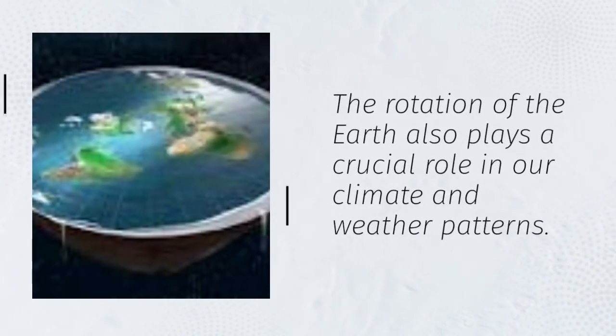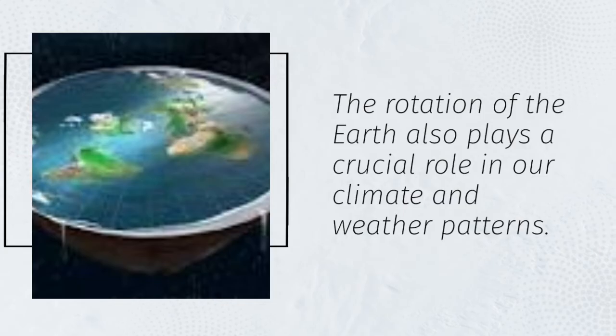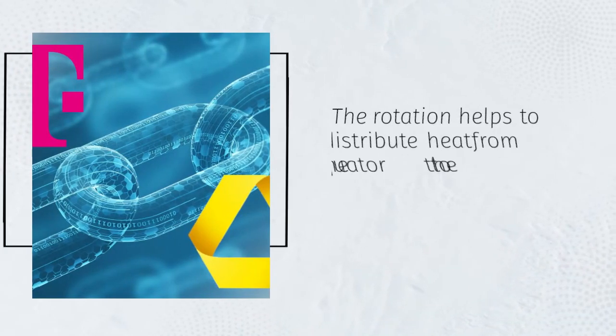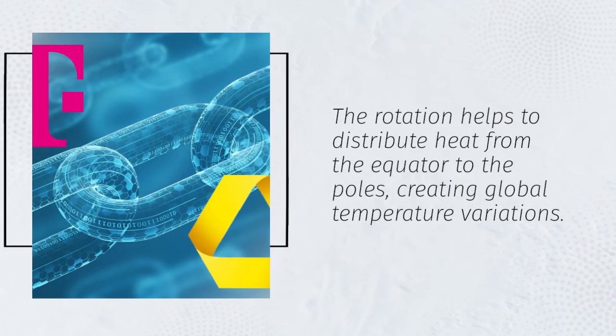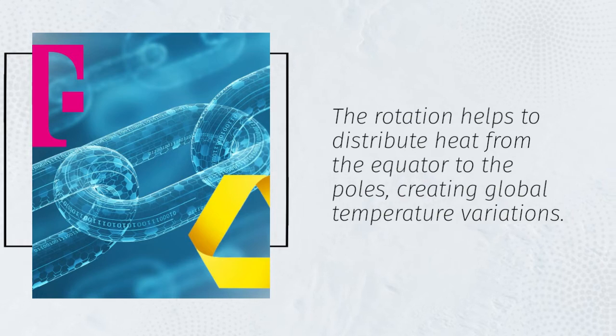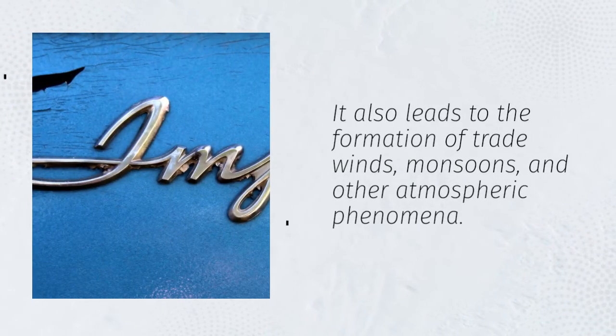The rotation of the Earth also plays a crucial role in our climate and weather patterns. The rotation helps to distribute heat from the equator to the poles, creating global temperature variations. It also leads to the formation of trade winds, monsoons, and other atmospheric phenomena.